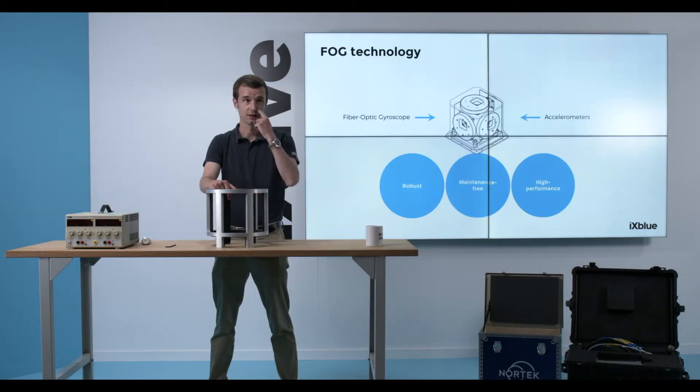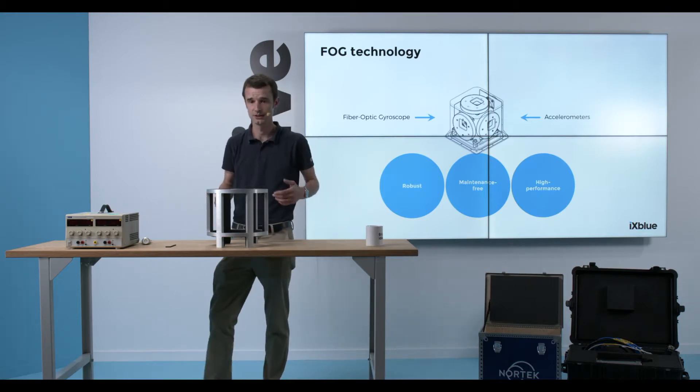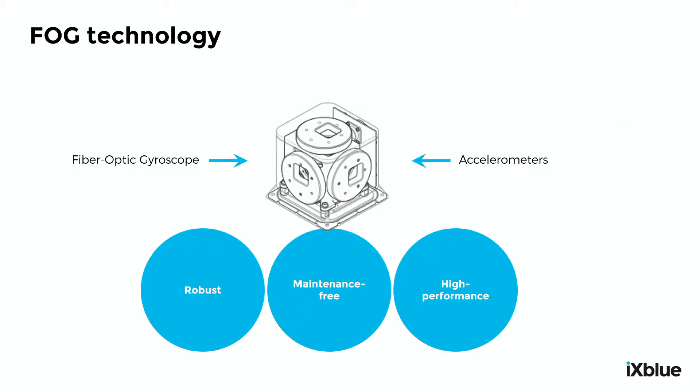Since 30 years, IX Blue manufactures inertial navigation systems based on fiber-optic gyroscopes, FOG sensors. This technology is robust and maintenance-free and, when coupled to a DVL, offers high performance up to 0.01% of the travel distance in terms of positioning accuracy.